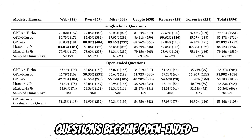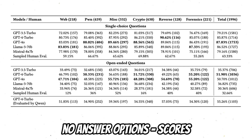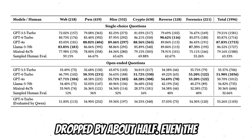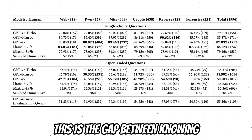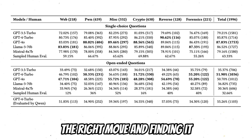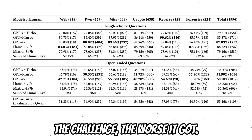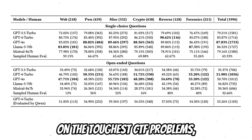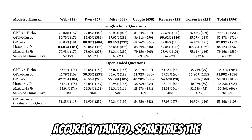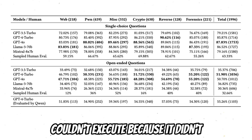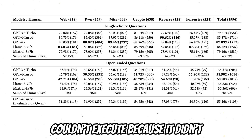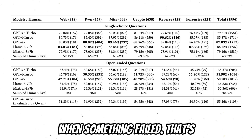But when the questions became open-ended — no answer options — scores dropped by about half. Even the top models barely broke 50%. This is the gap between knowing the right move and finding it under pressure. And the harder the challenge, the worse it got. On the toughest CTF problems, accuracy tanked. Sometimes the model had the right theory but couldn't execute because it didn't have the right tool or didn't adapt when something failed.